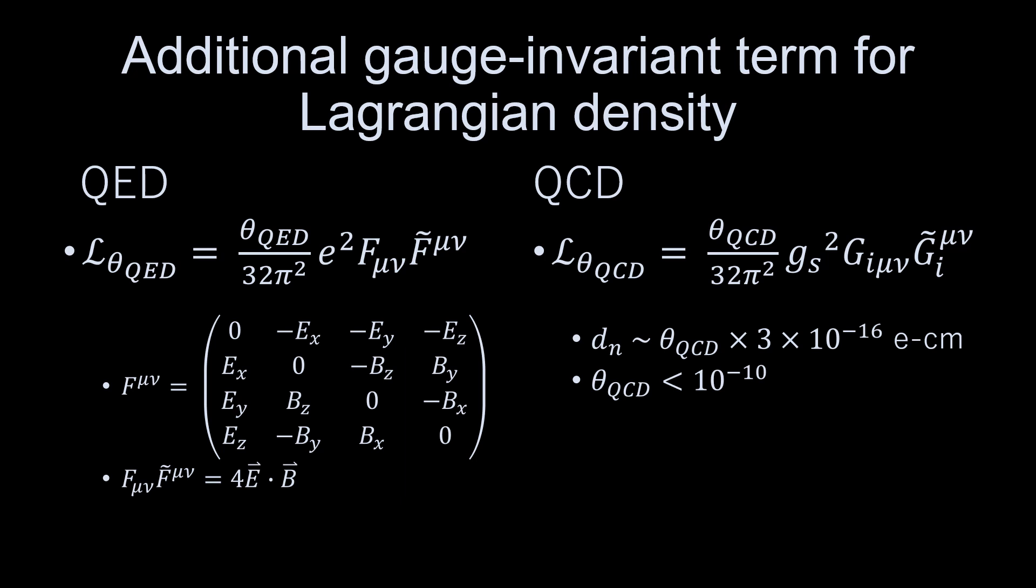A similar P, T, and CP violating term, lambda-theta-QCD, can be added to lambda-QCD. Unlike the QED case, lambda-theta-QCD is observable.